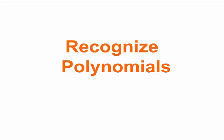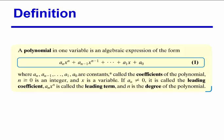Next, we're going to recognize polynomials. A polynomial in one variable is an algebraic expression where a_n, a_{n-1}, all the way to a_0 are constants — these are called the coefficients of the polynomial. n is greater than or equal to 0 and is an integer, and x is a variable. If the leading term a_n does not equal 0, it is called the leading coefficient, and a_n x raised to the n power is called the leading term, and n will be the degree of the polynomial.